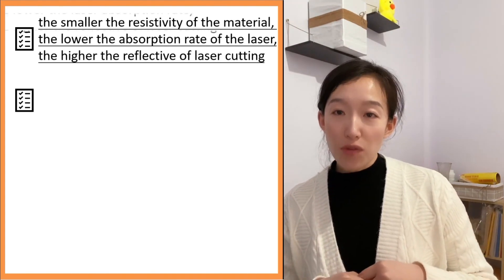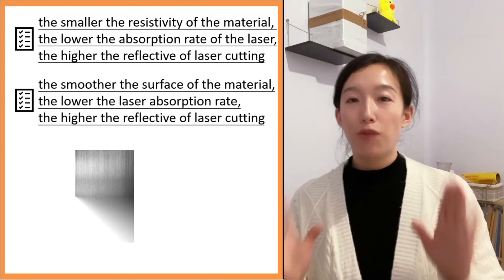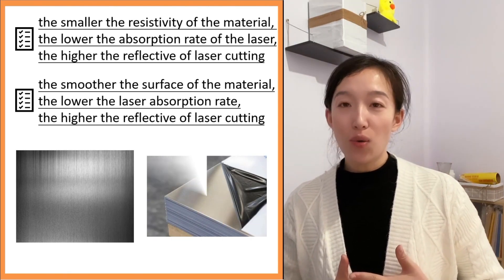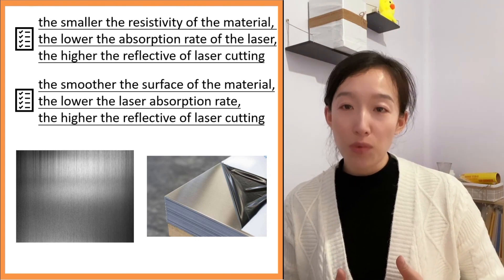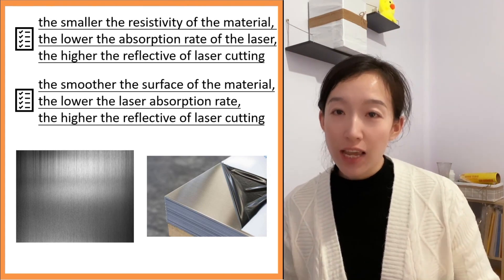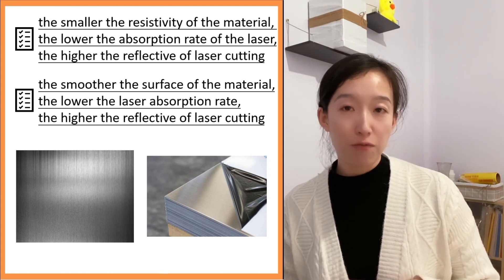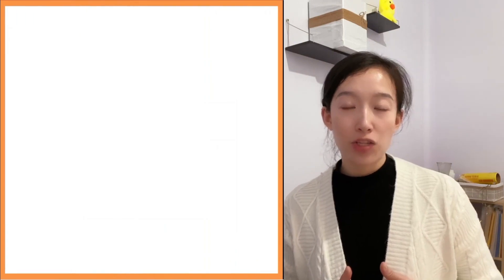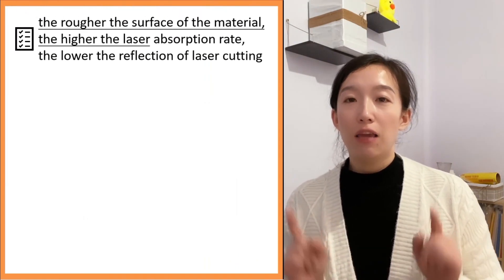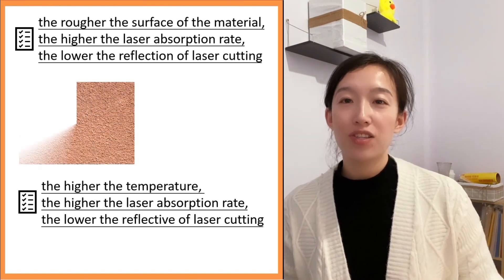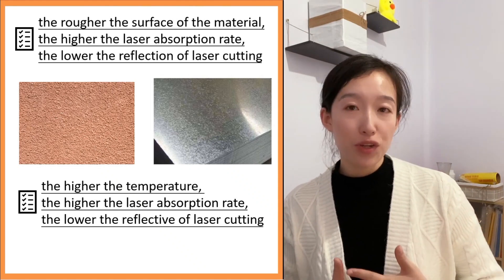The smoother the surface of the material, the lower the laser absorption rate. For ordinary brushed stainless steel, its reflectivity is not very strong, but when its surface is smooth enough to achieve a mirror effect, it also has a certain degree of reflection. For laser cutting, the rougher the surface, the higher the laser absorption rate — if rough enough, even copper is not highly reflective.